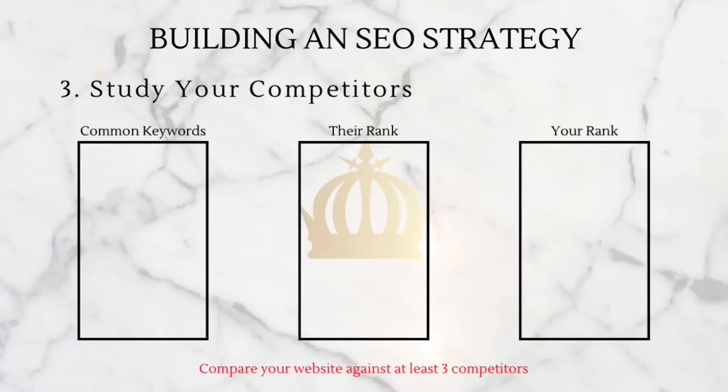The third tip for building an SEO strategy is to study your competition. Where does your competition rank on search engine platforms? Do you have any keywords in common? Where does your website rank in comparison? If they're ranking higher than you, see what keywords or hashtags they may be using. This is also your chance to see if they're using bad keywords that are causing them to rank lower, so you can find better keywords to rank higher.